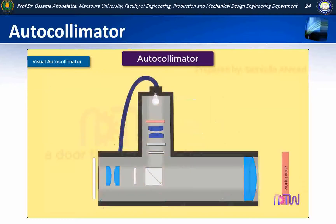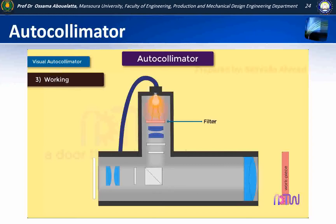Working of autocollimator: The light rays from the light source pass through the filter. This filter selectively transmits light in a particular range of wavelength. That means only particular colors within a particular range will be allowed to pass through the filter, while it absorbs the remaining colors.